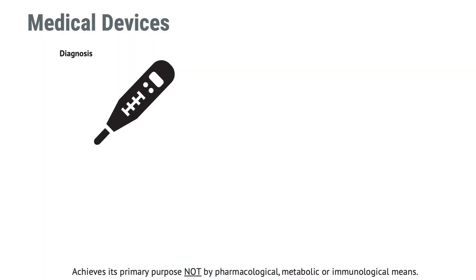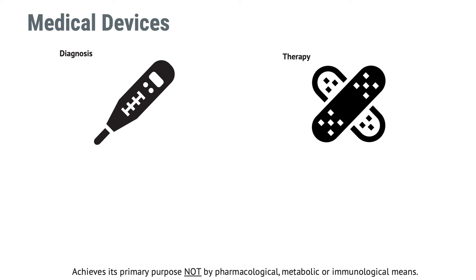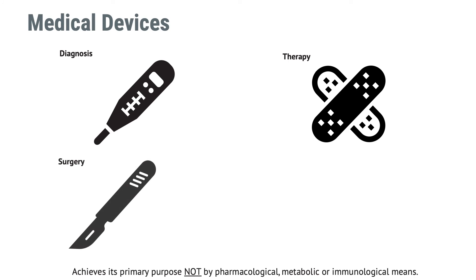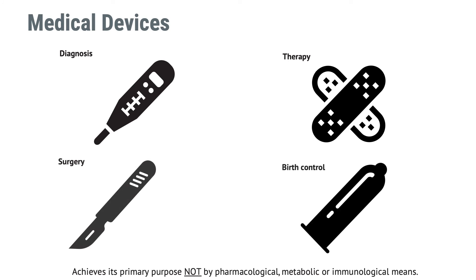So what all this means is that if you intend your product to be used for diagnosis — for example, a thermometer — therapy, which could be band-aids or surgery, let's say a scalpel, or as a contraceptive like a condom, and your product does not achieve its primary purpose by pharmacological, metabolic or immunological means, it is probably a medical device. Even if your product is assisted in its function by a medicinal product, it can be a medical device as long as the primary purpose is not achieved by the pharmaceutical component. Please note that also standalone software and mobile phone apps can be medical devices, assuming they meet the criteria of being a medical device.